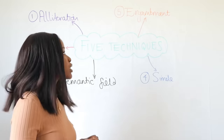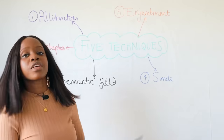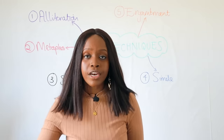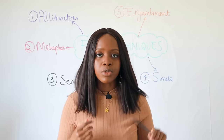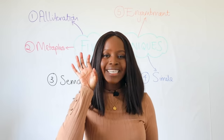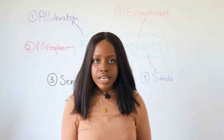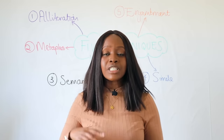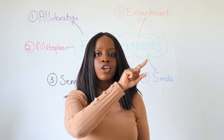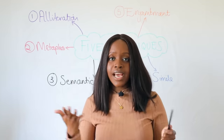The fifth and final technique you can always bank on is enjambment. Enjambment is when a line of poetry runs on without any punctuation at the end of the line — it just continues to the next. This speeds up the pace of the poem. If you were to read it aloud or perform the poem, you don't pause because there's no punctuation; you carry on to the next line and only pause when you see the next form of punctuation.